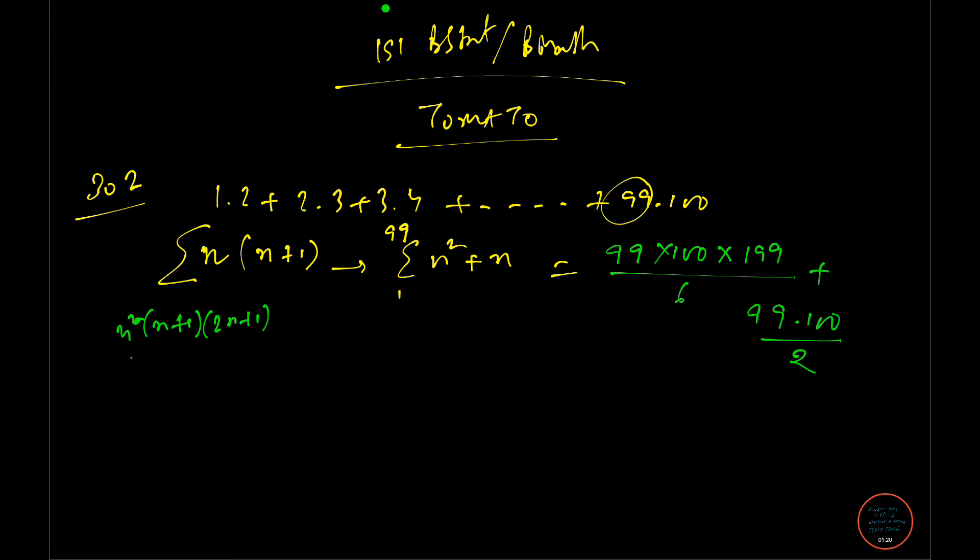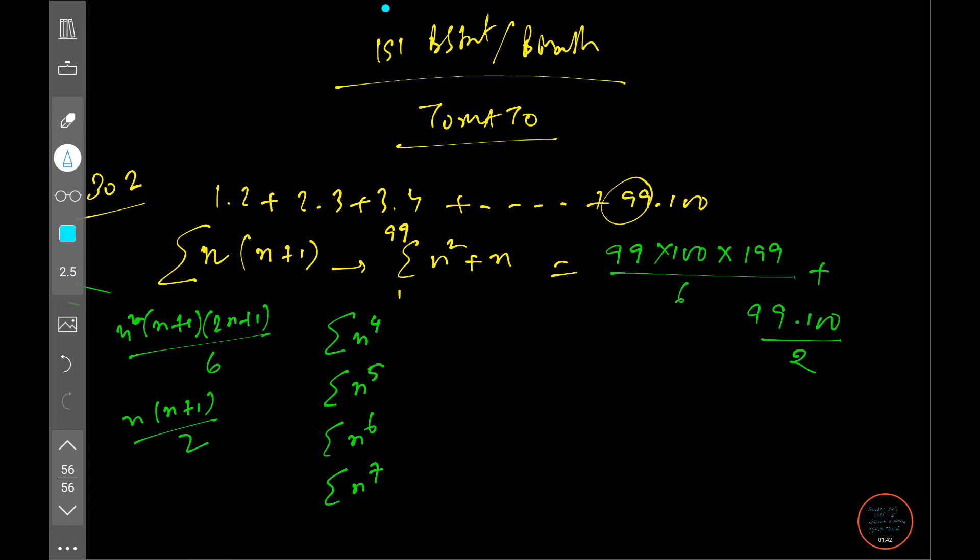That is the formula n(n+1)(2n+1)/6 and n(n+1)/2. In some of my advanced videos, I will tell you about the formulas for summation of n⁴, n⁵, n⁶, and even n⁷.